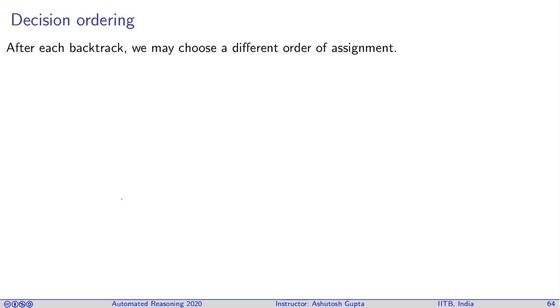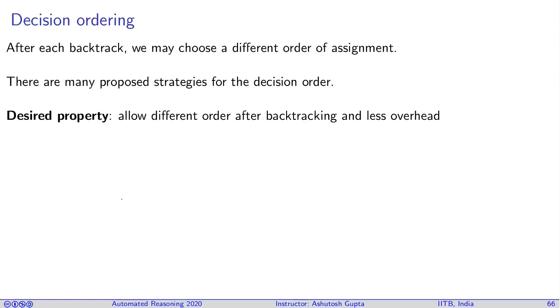Decision ordering. One of the key benefits of a DPLL algorithm was that each time you backtrack, you don't have to choose the same variable ordering again. Therefore, it's important to somehow make a decision which variable to choose next. What we want here is allow different order after backtracking and you should not have much overhead. If making a decision takes a lot of time, then what's the point of having a strategy?